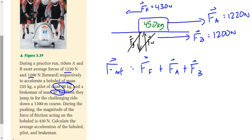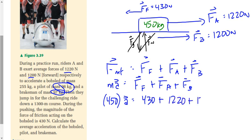We want to find the acceleration. So, we're going to replace F net with M times A and keep it equal to FF plus FA plus FB. And now, we're going to sub our numbers in here. The mass here that we care about is 450, not 630 because two guys aren't in the sled. Times the acceleration equals the force of friction is 430 plus FA is 1220 plus FB is 1200.